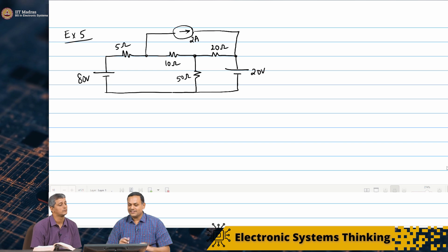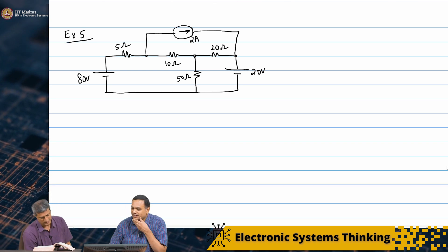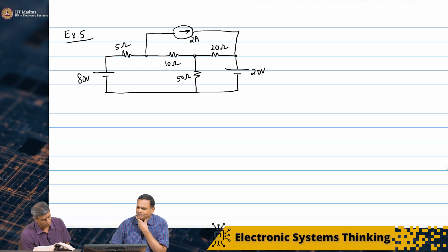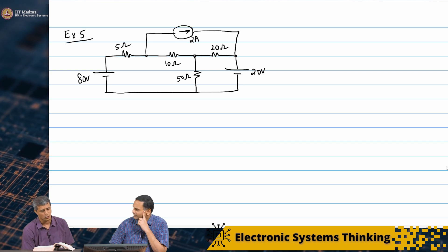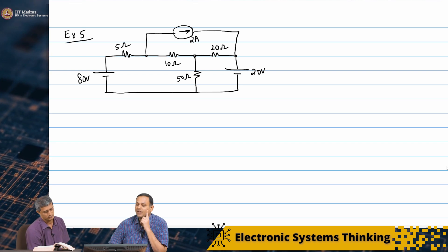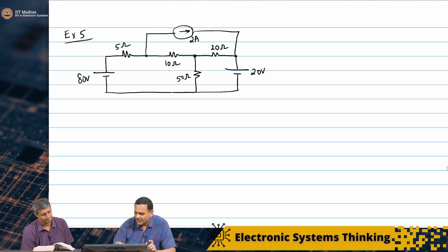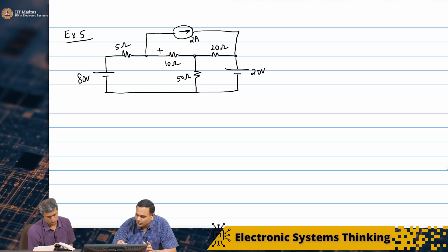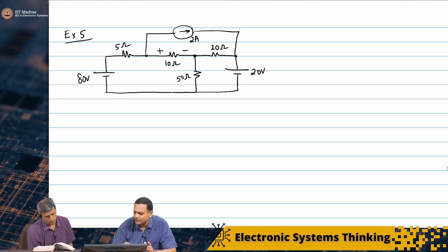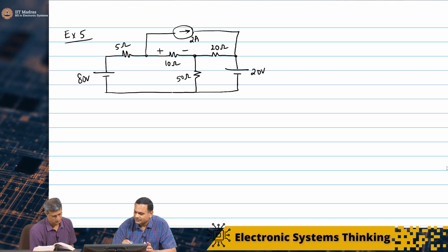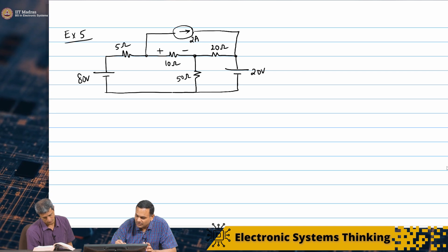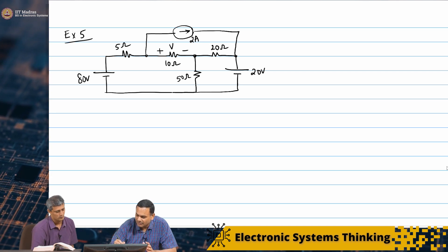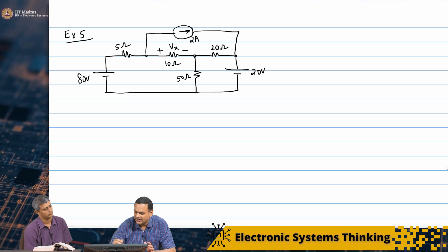This is an interesting problem. And what are we asked to find? We want to find the voltage across the 10 ohm resistor, from left to right. So we want to find out this voltage — we will call it some Vx, an unknown voltage.